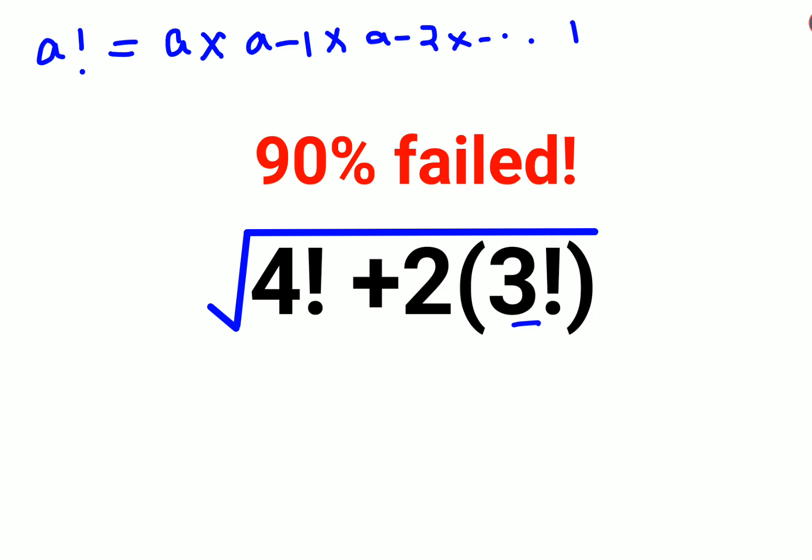So let's understand what is 3 factorial. 3 factorial will be 3 into 2 into 1, that is nothing but 6.